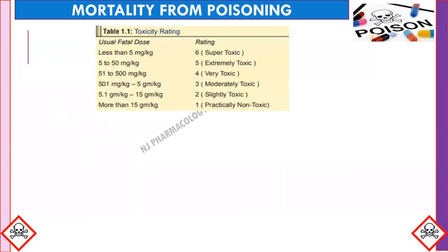In most poisoning cases, the doctor is unaware of the exact nature of the poison consumed, and even when the identity and dose of a single ingested poison is known, the doctor may not have a clear idea about its toxicity. To help physicians assess hazardous poisons, a system of toxicity rating has been evolved. Higher the toxicity rating, greater is the potency. In the tabular column, toxicity rating 6 is super toxic, 5 is extremely toxic, 4 is very toxic, 3 is moderately toxic, 2 is slightly toxic, and 1 is practically non-toxic, along with usual fatal doses.